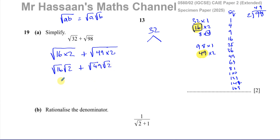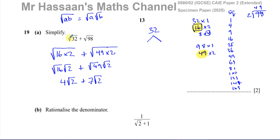The square root of 16 is 4, so we have 4√2. The square root of 49 is 7, so we have 7√2. Now, one thing a lot of people get confused with: they say 'take the square root of 16, you get plus or minus 4.' But the square root sign by itself, when it's given in the question already, means the positive square root of 32. That's what it means.